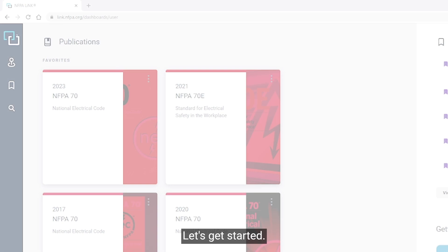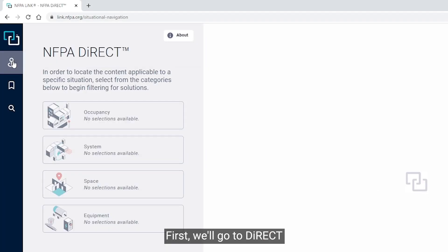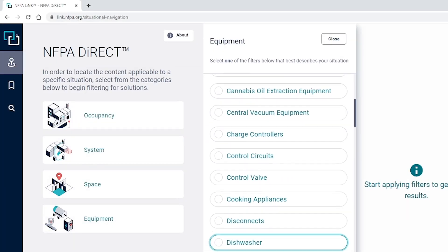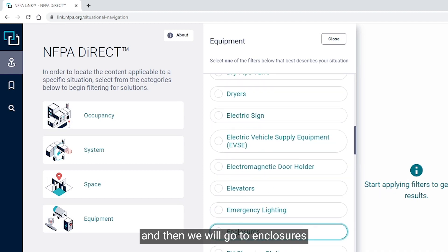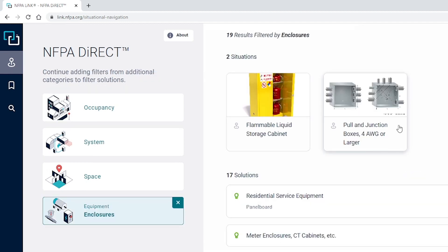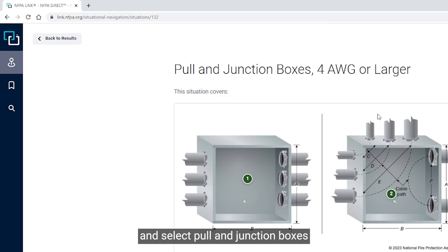Let's get started. First, we'll go to Direct, Equipment, and then we will go to Enclosures and select Pull and Junction Boxes.